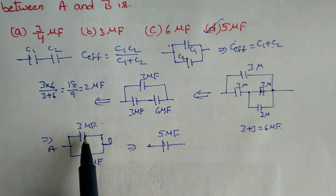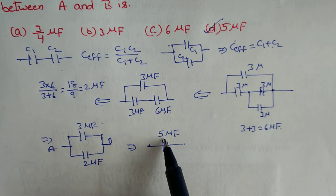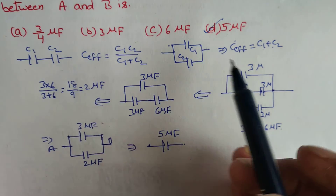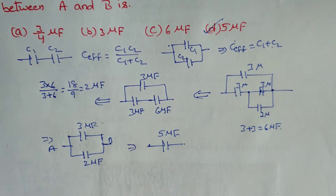If you see these two parallel values — 3 plus 2 — you get 5μF. Looking at the four options, the answer is option D. Thank you.